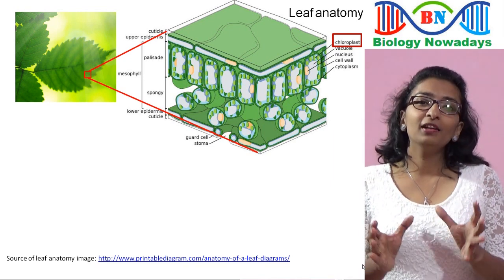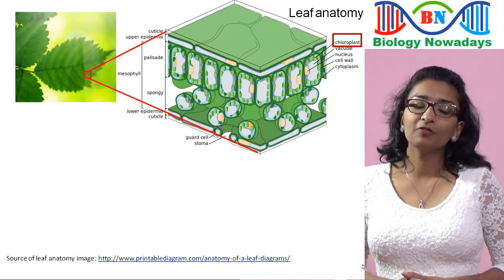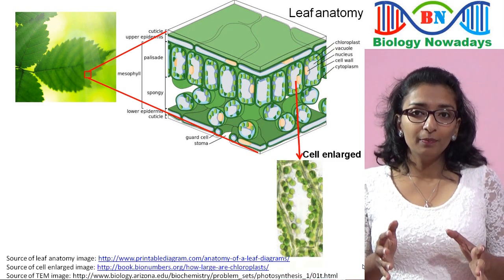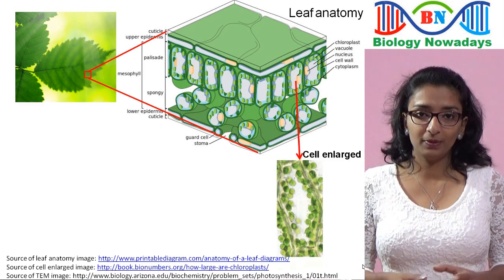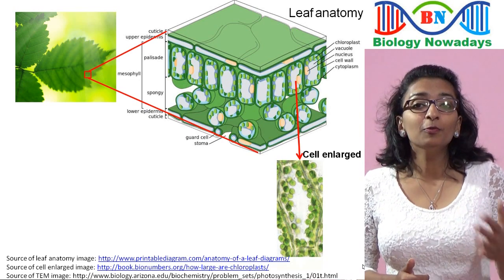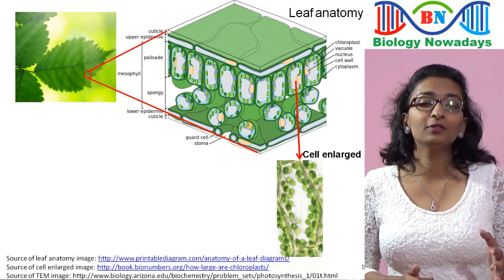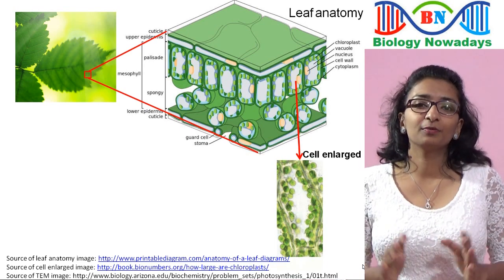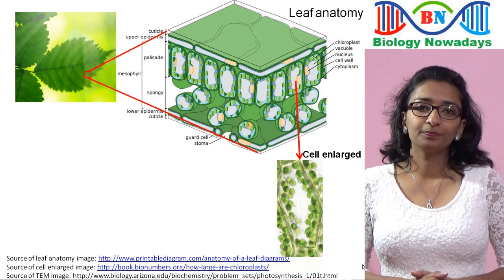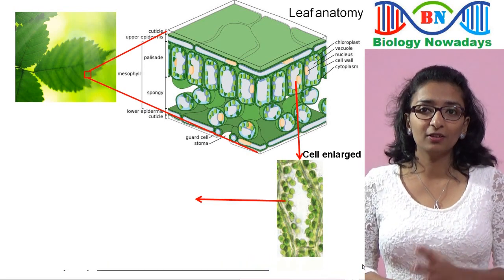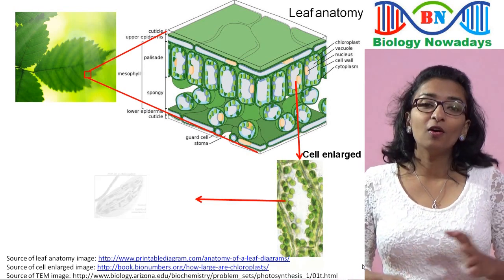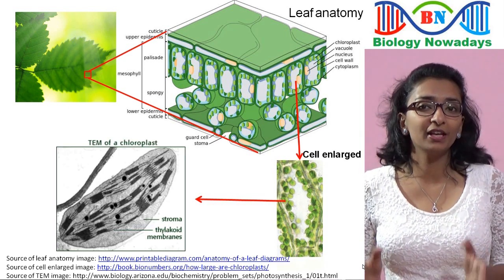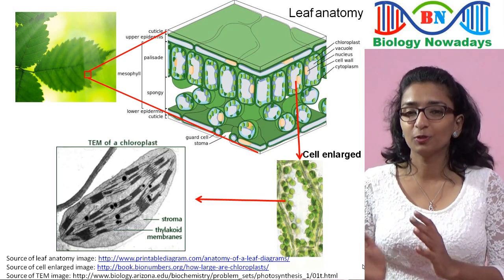Now, if you go for a higher magnification of a single palisade cell, you may find about 40 to 50 chloroplasts. If we want to see the ultrastructure of a single chloroplast, then we have to use an electron microscope. The transmission electron micrograph is shown here.